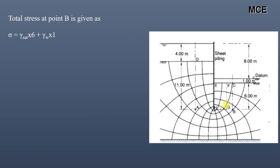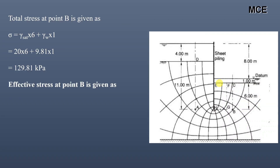The total stress at point B is given as the saturated unit weight of soil multiplied by the distance of point B from the ground surface, which is 6 meters, plus the unit weight of water times the height of the water table above the ground surface, which is 1 meter. This equals 20×6 plus 9.81×1, which is 129.81 kilo Pascal. The effective stress at B equals total stress minus pore water pressure, which is 129.81 minus 84.37, equal to 45.44 kilo Pascal.